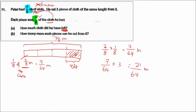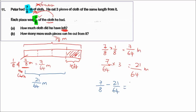So this whole thing here — the 21 over 64 meter — is what was cut. Now, how much is left? The amount left is 7 over 8 minus 21 over 64. If you do the calculation, you get 35 over 64 meter. So you have 35 over 64 meter remaining. Now, how many more such pieces can he cut from it?